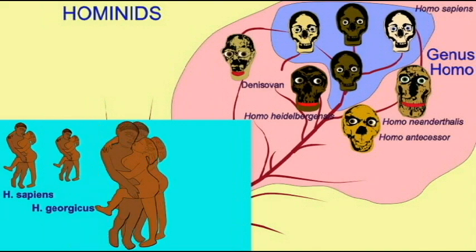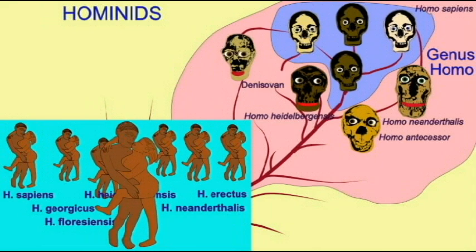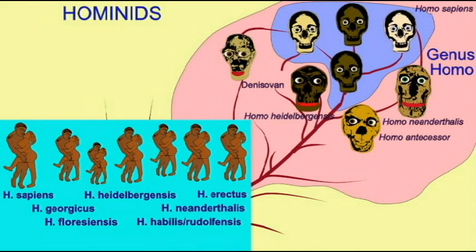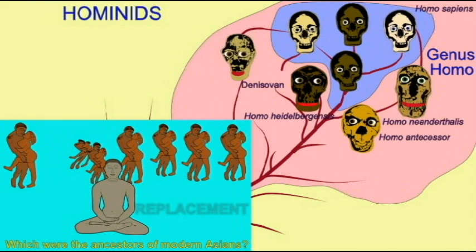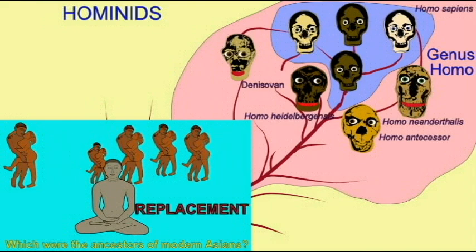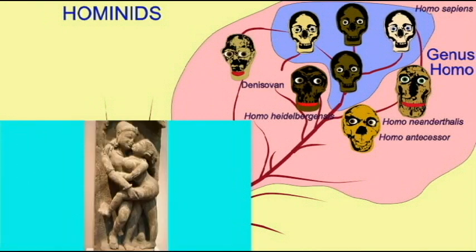The first Homo sapiens are known in Africa 200,000 years ago, and as they spread throughout Africa, and later 70,000 years ago when they reached the Middle East and Asia, and then 40,000 years ago when they begin to enter Europe, we can ask: what happened then? There were already other species of hominid living in Africa, in Asia, and in Europe when Homo sapiens reached there.